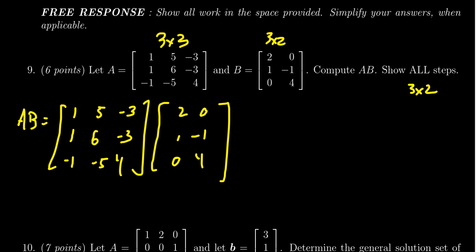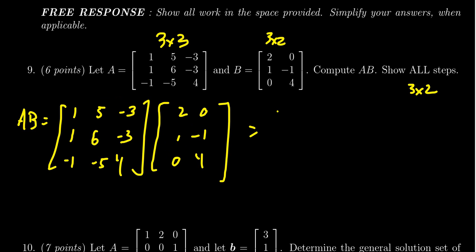We're going to take the dot product of the first row with the first column. We get one times two which is two, plus five times one which is five, minus three times zero which is zero. That gives us the first entry.